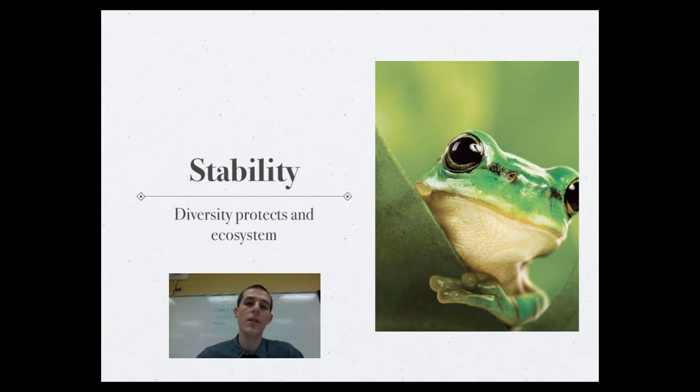Also, diverse ecosystems are more resistant to invasive species, and there's several hypotheses about that. One is that the biodiversity takes away resources that an invasive species might be able to use. It also provides a greater opportunity that there's some sort of predator in that ecosystem that will keep the invasive species out. So, diversity leads to stability in ecosystems.